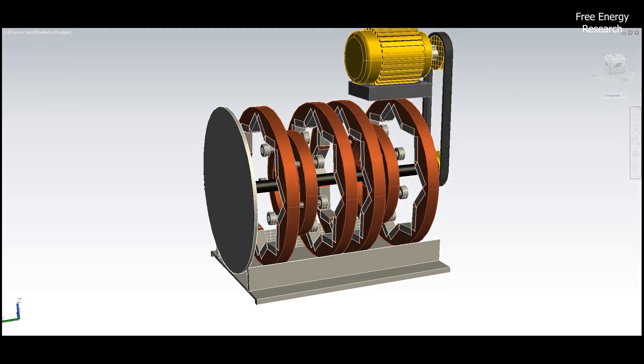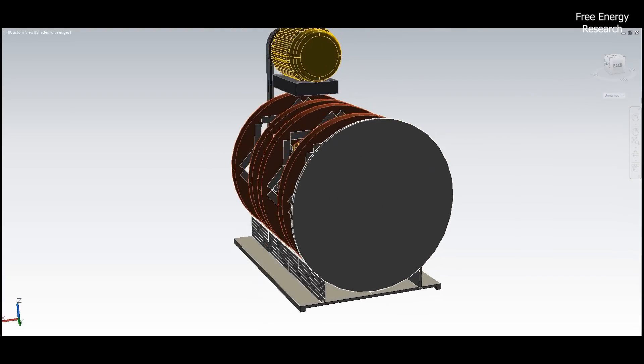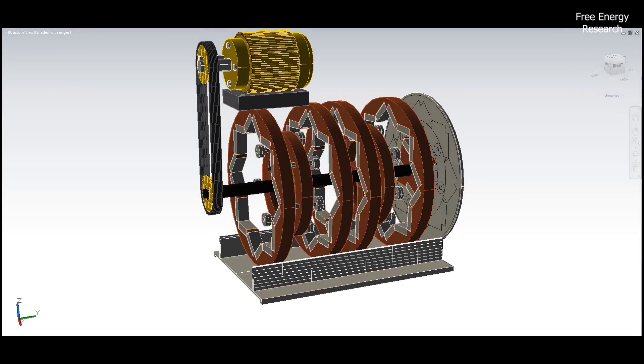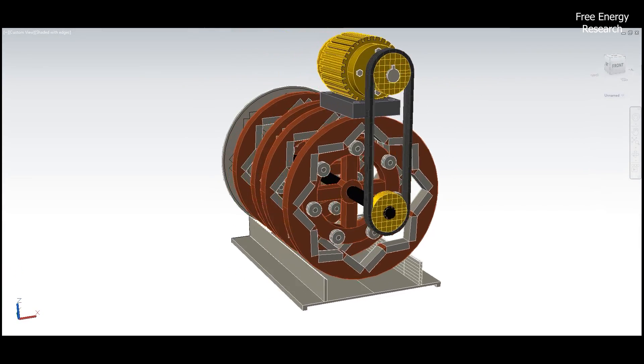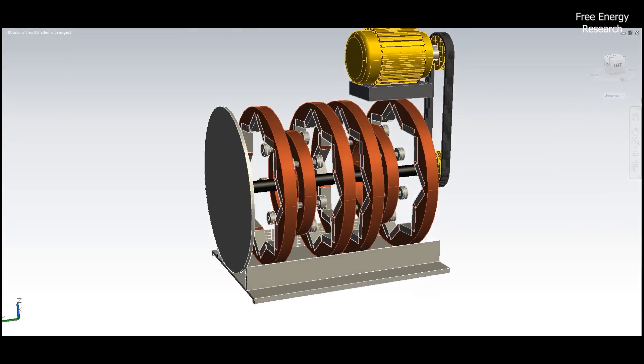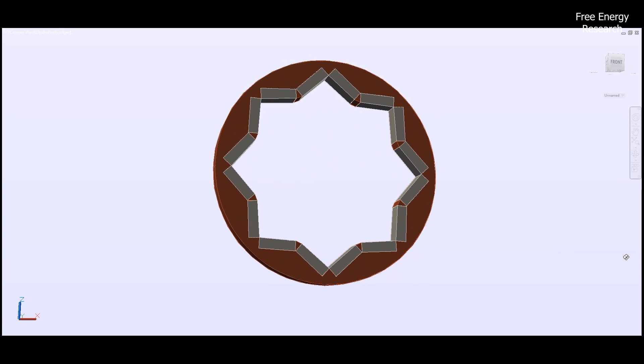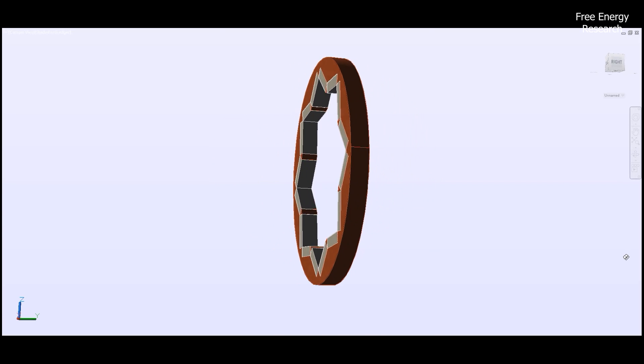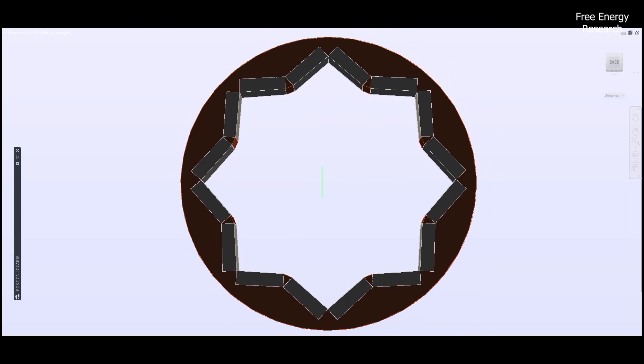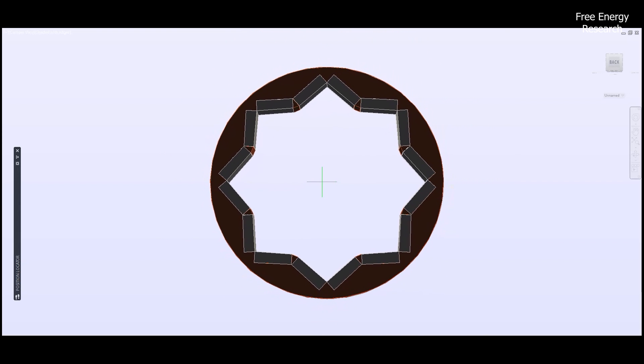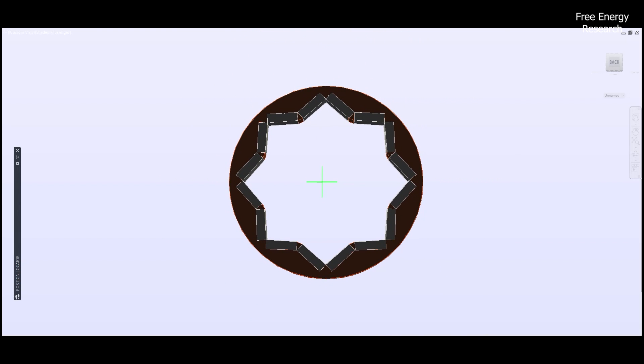As the rotating member spins on the shaft, the attraction and repulsion forces between the magnets propel it forward, generating rotational kinetic energy. The device's efficiency is further enhanced by the sawtooth edge on the circular plate of the second member. This design optimizes the magnetic field interaction, allowing for a smooth and continuous energy output.